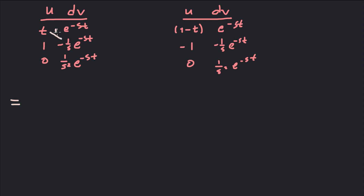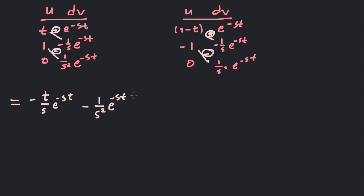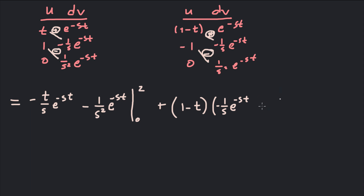Applying the tabular signs — multiply keep, multiply change, multiply keep, multiply change — we get negative t over s times e to the negative st, minus 1 over s squared times e to the negative st, evaluated from 0 to 2 for the first integral. Then plus: 1 minus t times negative 1 over s times e to the negative st, plus 1 over s squared times e to the negative st, evaluated from 2 to infinity.